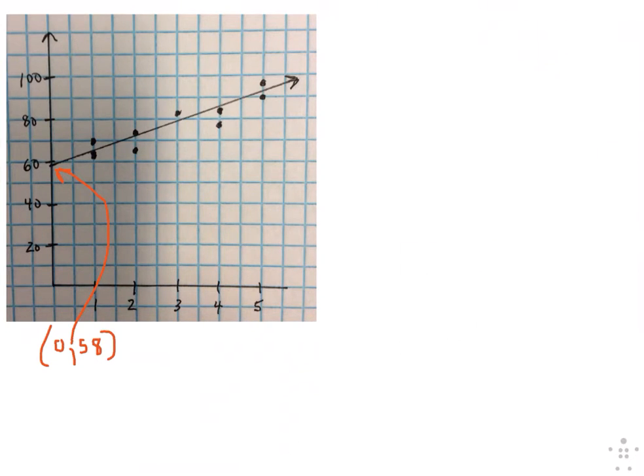We need to find another point on the line. This is the closest one, just under 90. I'm going to call this point four and a half. Four and a half is not going to make for a very good slope calculation, but that's about 89, so (4.5, 89).